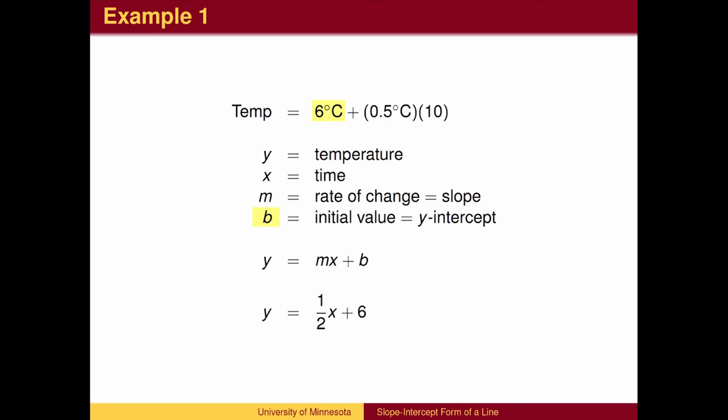We also need to be given an initial value. The initial value typically corresponds to the y value when the x value is 0, which is the y-intercept. We denote the y-intercept by the letter b. The equation then becomes y equals mx plus b. y is the initial value plus the change, which is found by multiplying the rate of change by the input.